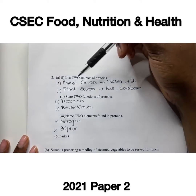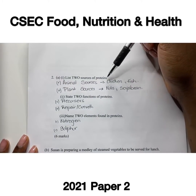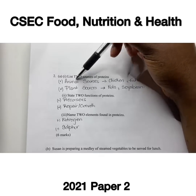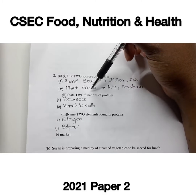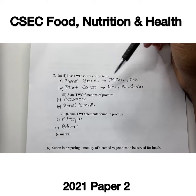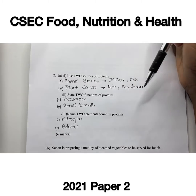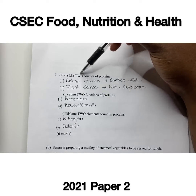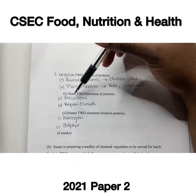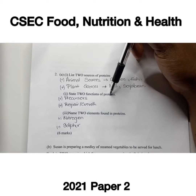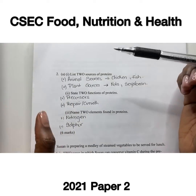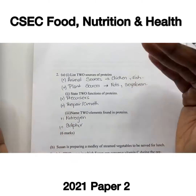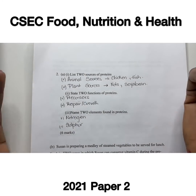Number two asks to list two sources of protein and state two functions. Sources of protein come from animal sources such as chicken or fish, and plant sources such as nuts or soybeans. Proteins are precursors — they are useful to make components in the body like antibodies, hormones, and enzymes.